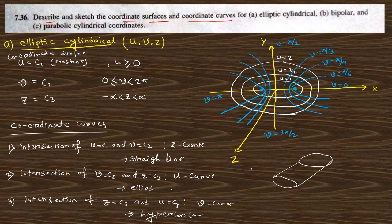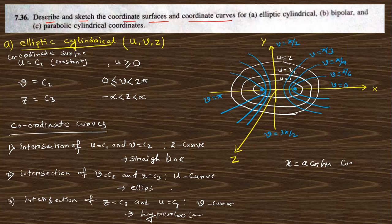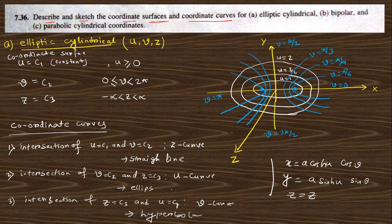The third intersection gives curves that are ellipses and hyperbolas. The transformation equations are: x equals A cosh(u) cos(v), y equals A sinh(u) sin(v), and z equals z. This is the equation of the elliptic cylindrical coordinate system, and this is the sketch. So this is the answer to part A.